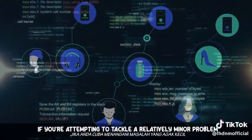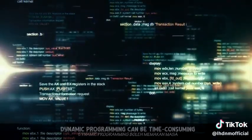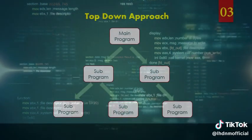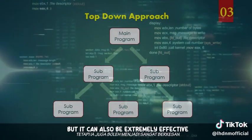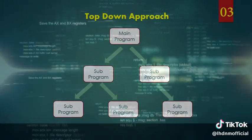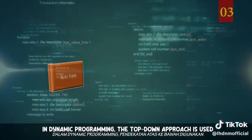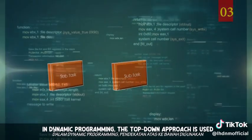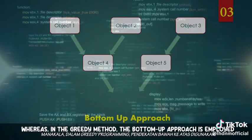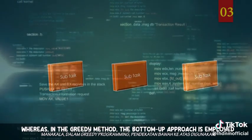If you're attempting to tackle a relatively minor problem, dynamic programming can be time-consuming, but it can also be extremely effective. In dynamic programming, the top-down approach is used, whereas in the greedy method, the bottom-up approach is employed.